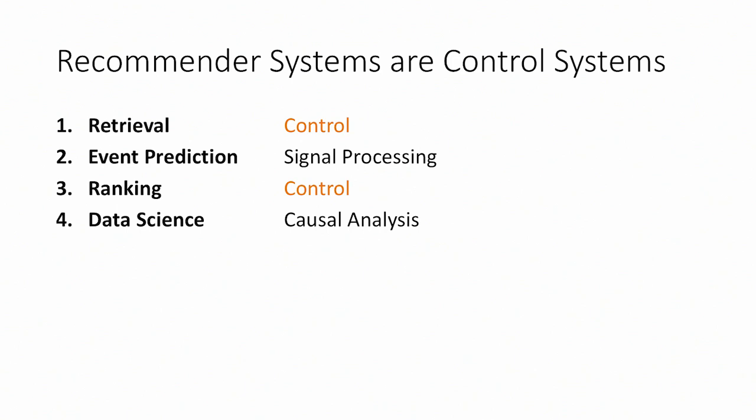I'm going to argue that recommender systems are actually control systems. Now, when I say control systems, it can sound like something that would be on the Death Star or something. But I'm thinking of it more from like a control theoretic point of view. If you're familiar with Kalman filters or even PID controllers, I'm going to argue that recommender systems are really in that vein. The retrieval and ranking are definitely control systems. After we've been running the system for a while, then we're going to do causal analysis. And that, in my opinion, is the most important part, but it's also the hardest.